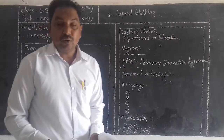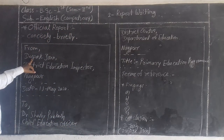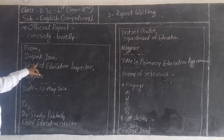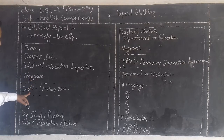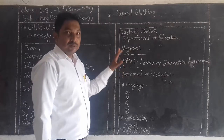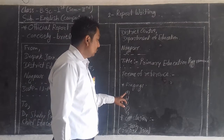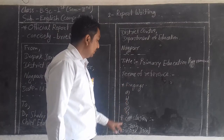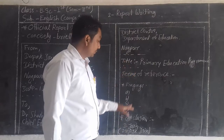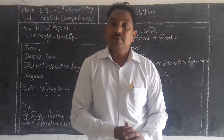In this way we can write any official report. First, the FROM field with the name of the person writing the report, their designation, and name of the place; then the date; then the TO field with that person's name, designation, and place; then the title — which means subject; then terms of reference; then findings describing how the information was collected; then the conclusion and finally the signature of that person. So students, this part ends here. Thank you very much.